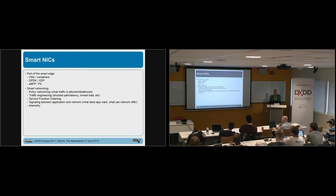And that's part of what we call smart networking, policy networking, whatever, in the broadest sense. Things like what traffic or what entities are allowed to talk to other entities, traffic engineering, service function chaining, and telemetry of course.